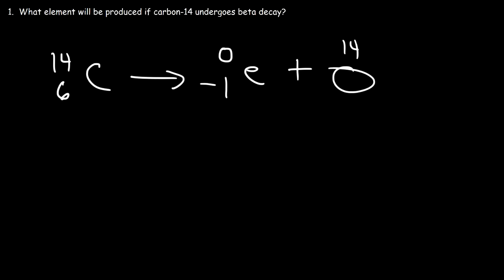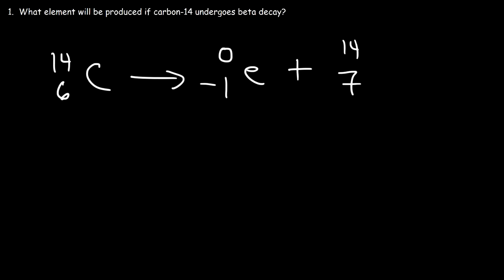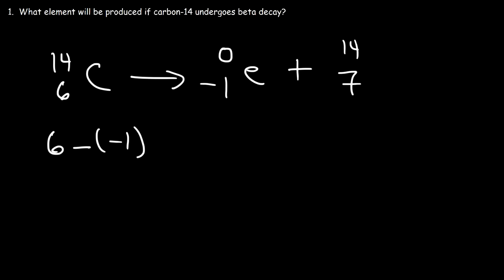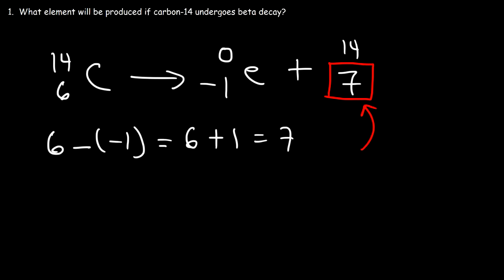What is the number of protons in this element? Negative one plus what number adds up to six? We know that negative one plus seven is six. Another way is to take six minus negative one, which is the same as six plus one, which is seven. Go to the periodic table and look for the element with an atomic number of seven — the number of protons identifies the element. Nitrogen has an atomic number of seven, so if carbon-14 undergoes beta decay, nitrogen-14 will be produced.